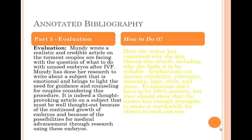The annotated bibliography has a third part: your evaluation. Here you need to talk about why you've chosen the article and why you find it to be reliable — this is where you establish who the author is and why they have the authority to speak on the subject. Evaluations can discuss reliability, relevance, currency, logic, style, and more. Evaluations don't have to be 100% positive — it's okay if you don't totally like the article or book, but they should show the source has enough strength to be worthwhile. If you really dislike an article, do not write an annotation about it, but it's okay if you like it about 75%.